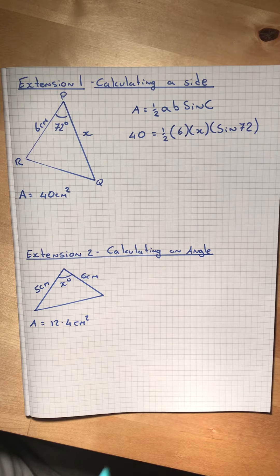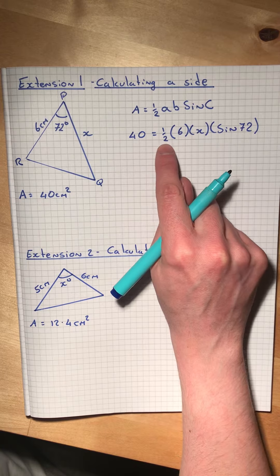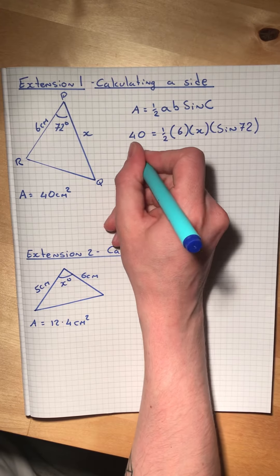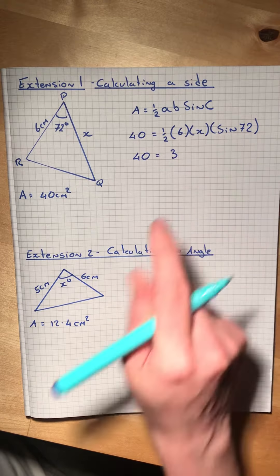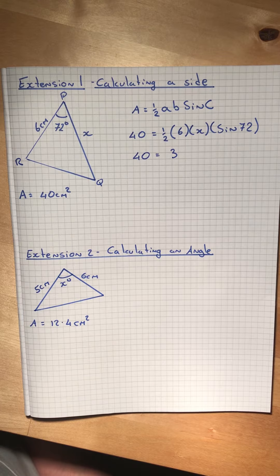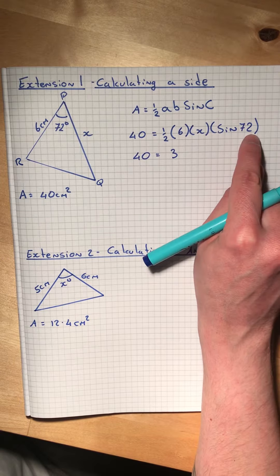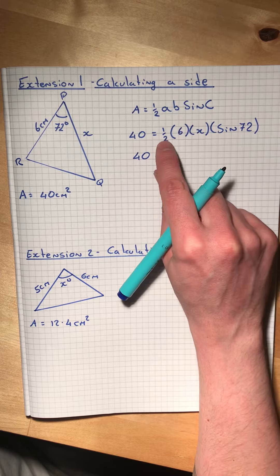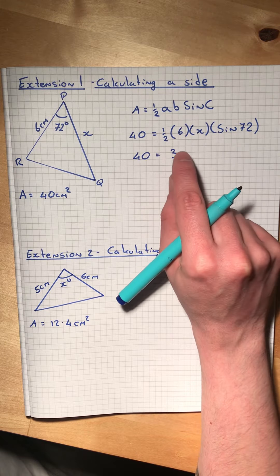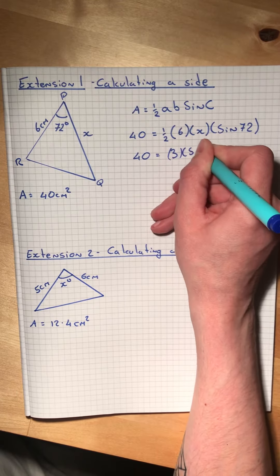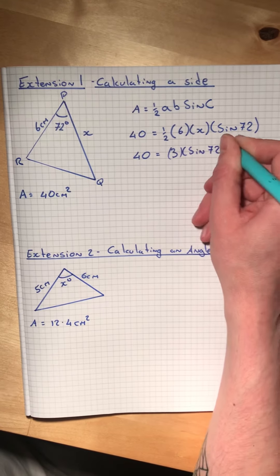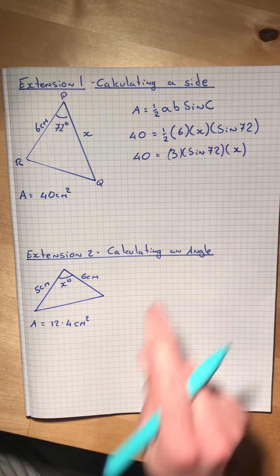What we can now do is simplify. Half of 6 is just 3. It doesn't matter which order you multiply in, so 6 times x times sine 72 can be rearranged. One-half times 6 is 3, so 3 times sine 72 times x means the same thing.